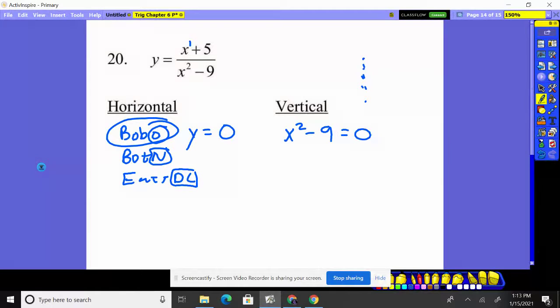We always set it equal to zero because we can't have it be zero. So we got to draw lines at that location. Notice that this factors to an x plus three, x minus three. It's a difference of squares.